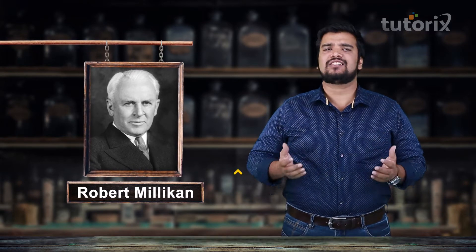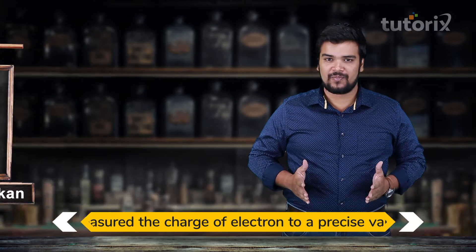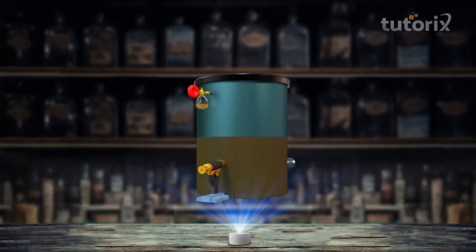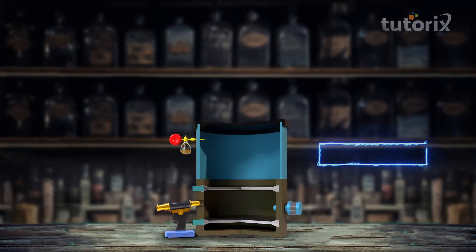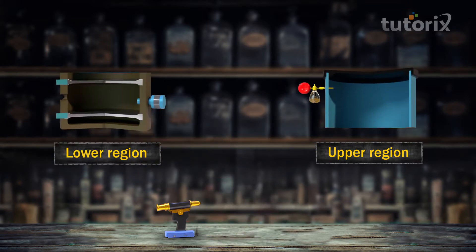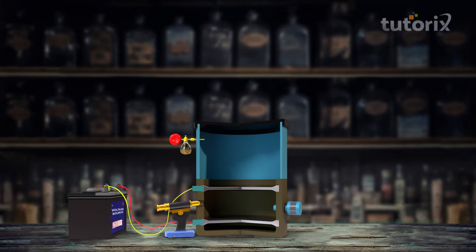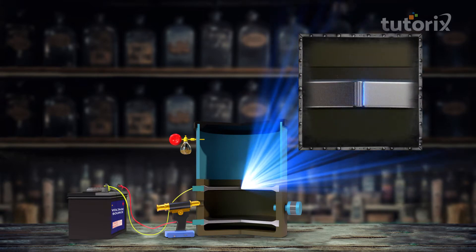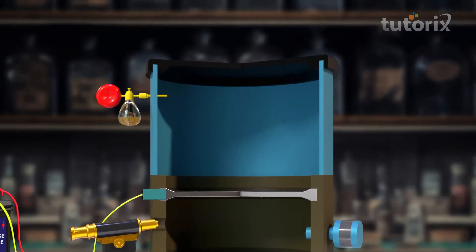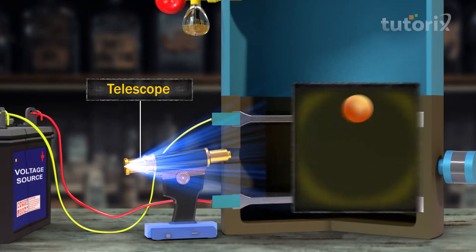Robert Millikan had an ingenious idea to measure the charge of the electron to a very precise value, and he did this using his famous oil drop experiment. For this experiment he created a unique apparatus. There were two metallic plates — the top plate separated the apparatus into two regions: the upper region and the lower region. These two plates were connected to a variable voltage source. There was also a tiny hole in the top plate through which only one drop could pass at a given time. To make the oil droplets he used an atomizer, which creates oil droplets just like how a perfume spray creates a mist.